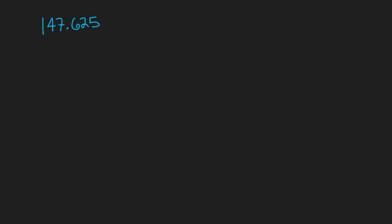We're going to start with the number 147.625. I won't go into detail on how to convert to binary here, but I have a previous video that demonstrates that. Step one is to get the binary representation of this number, which is 10010011.101 — that is the binary representation of 147.625.